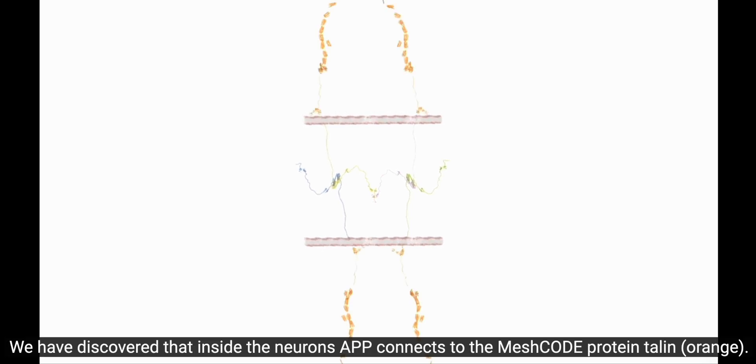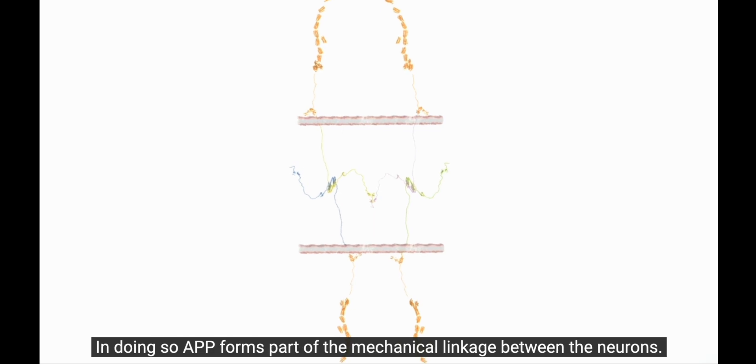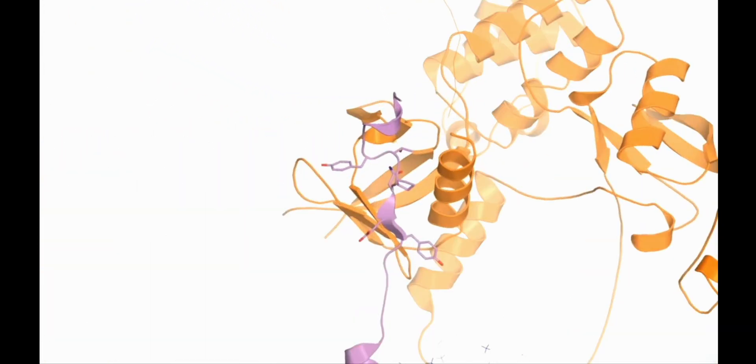We have discovered that inside the neurons, APP connects to the mesh code protein talin, shown in orange. In doing so, APP forms part of the mechanical linkage between the neurons.